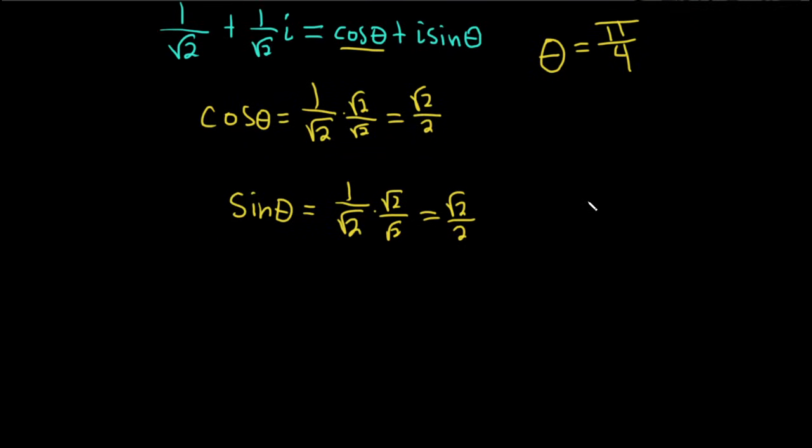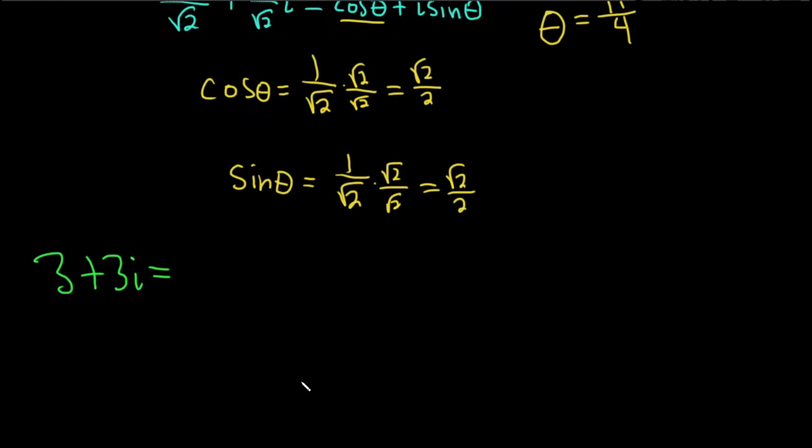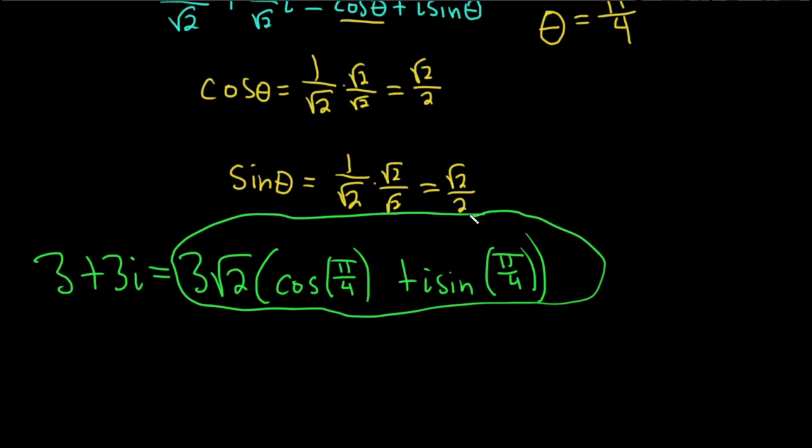So we did it. We've got it. So let's write our final answer down. So 3 plus 3i is equal to r, which is 3 square root of 2. And then we had parentheses cosine pi over 4. Theta is pi over 4. Cosine of pi over 4 plus i sine pi over 4. So this is one way to write the answer. This would be the polar or trig form of the complex number.